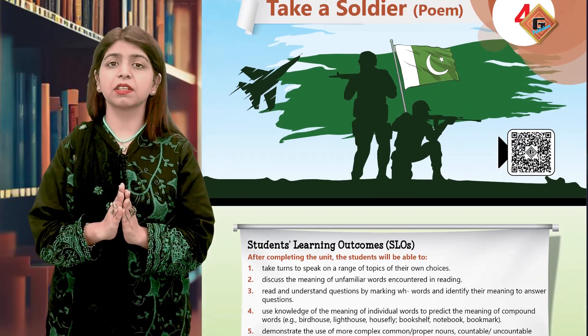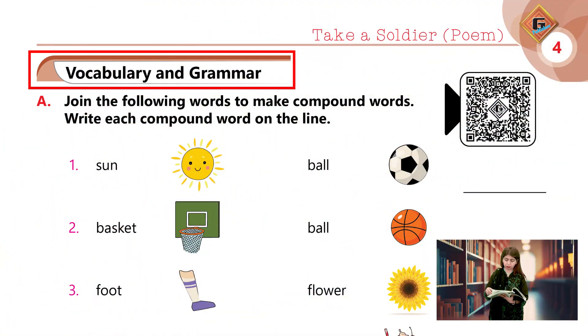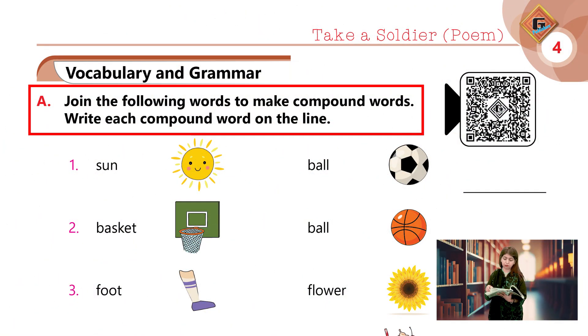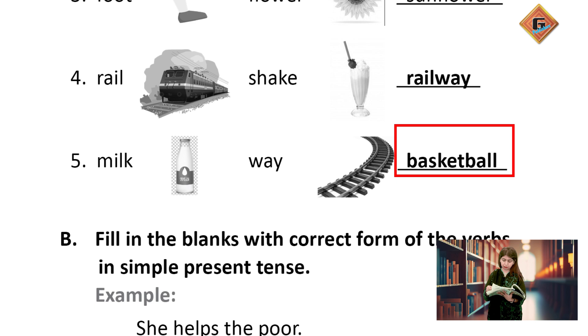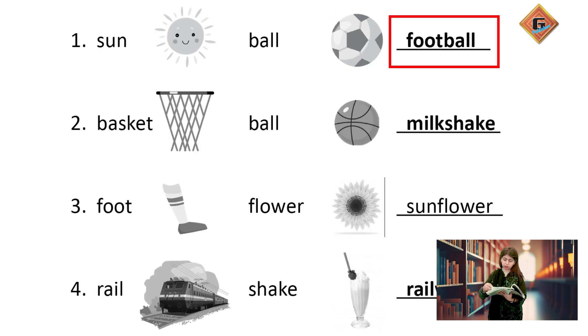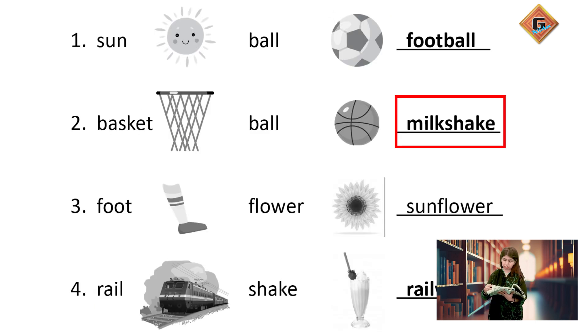With the exercise now — vocabulary and grammar. Join the following words to make compound words and write each compound word on the line. Yahan agar hum pahle dekhen toh: sunflower, basketball, football, milkshake.